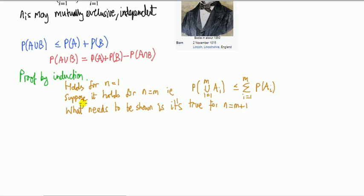First it holds trivially for n equals one. Probability of A_1 equals probability of A_1. So then the next step is to suppose it holds for n equals m, m being some finite number. So if you replace the n by m, we're going to suppose this holds. Then what we need to show now is that it's true for n equals m plus one, so the next one along, and we're going to use this result.